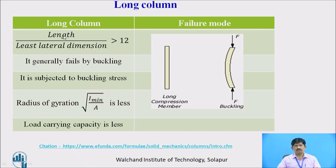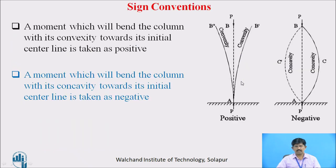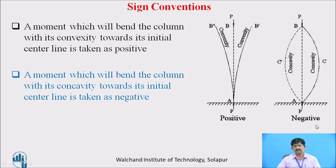A long column is one which has a length to least lateral dimension ratio greater than 12, and it generally fails by buckling and is subjected to buckling stress. The radius of gyration is less for a long column and the load carrying capacity is lesser; the failure mode is by buckling. Sign convention: a moment which bends the column with its convexity towards the initial centre line is taken as positive, and the moment which bends the column with concavity towards the initial centre line is taken as negative.